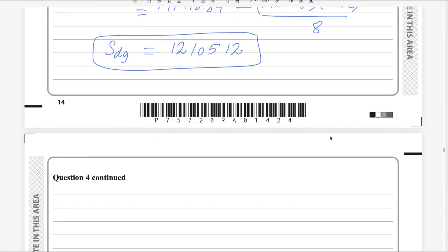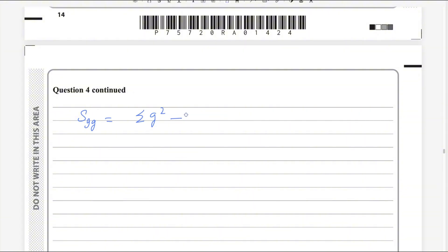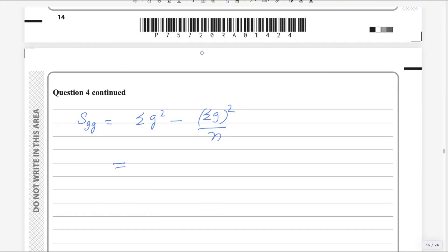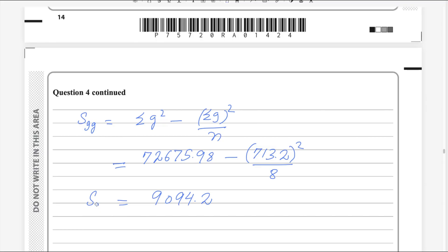Now using the values in this formula, we get the other answer as well. Summary statistics Sgg equals sum of g squared minus the whole square of sum of g, divided by n. All these values are given. Sum of g squared is 72,675.98 and sum of g is 713.2. It is 72,675.98 minus 713.2 squared, divided by 8. Write this as is in your calculator and you get the answer as 9094.2. So this is the answer for the second part.